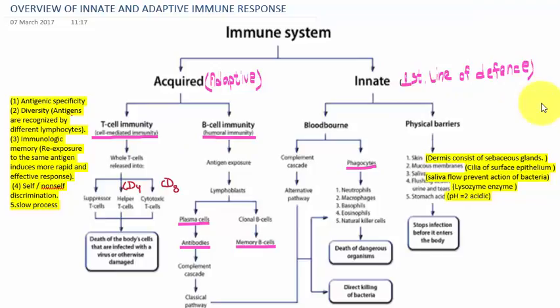This has been an overview of innate and adaptive immune response — how they differ from each other and how they are interconnected. When cells of innate immunity first defend against a pathogen, macrophages and other cells enter the lymphocyte system and produce B and T cells, generating the adaptive immune response. In this way, innate and adaptive immune responses are interconnected with each other. That's all for this overview. I hope it will help you. Thank you.